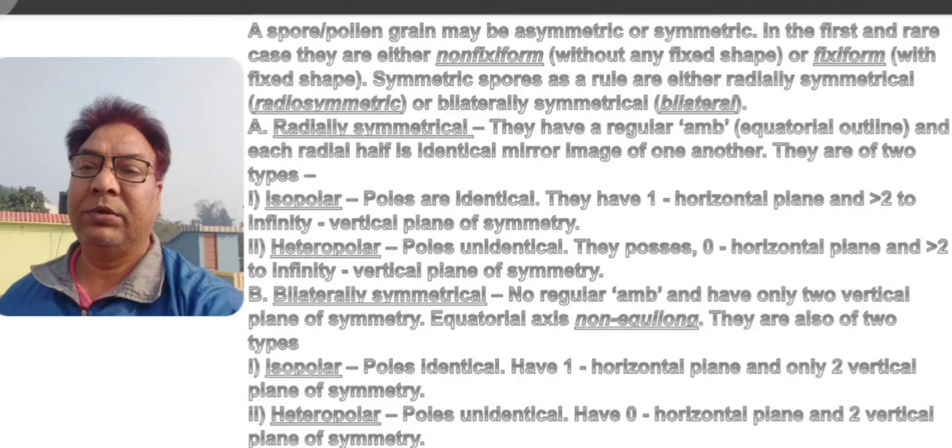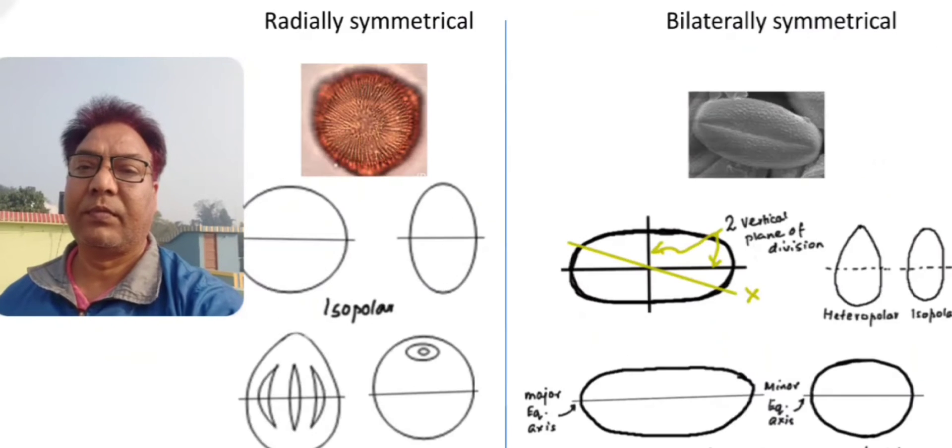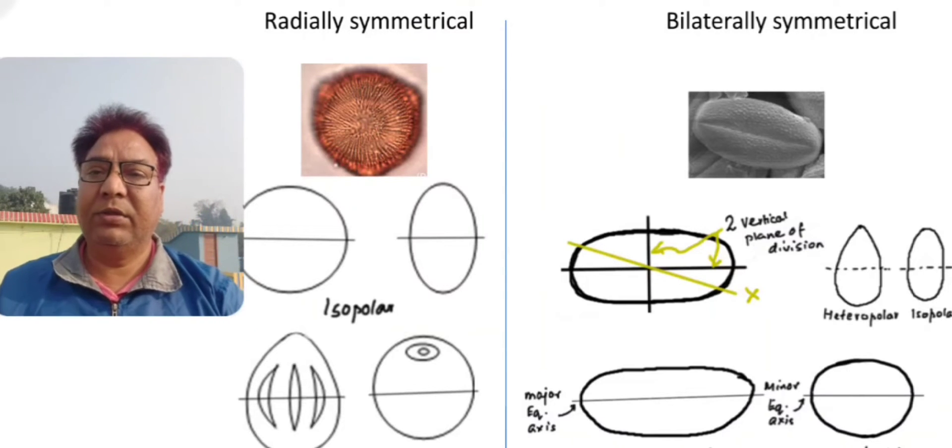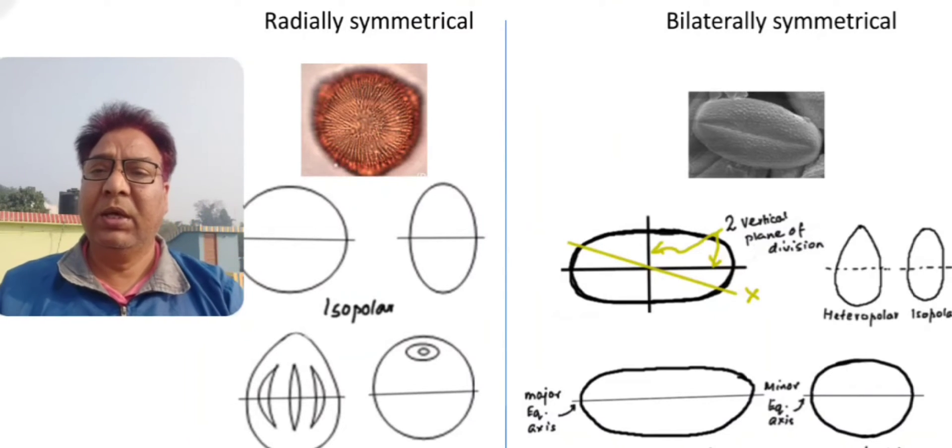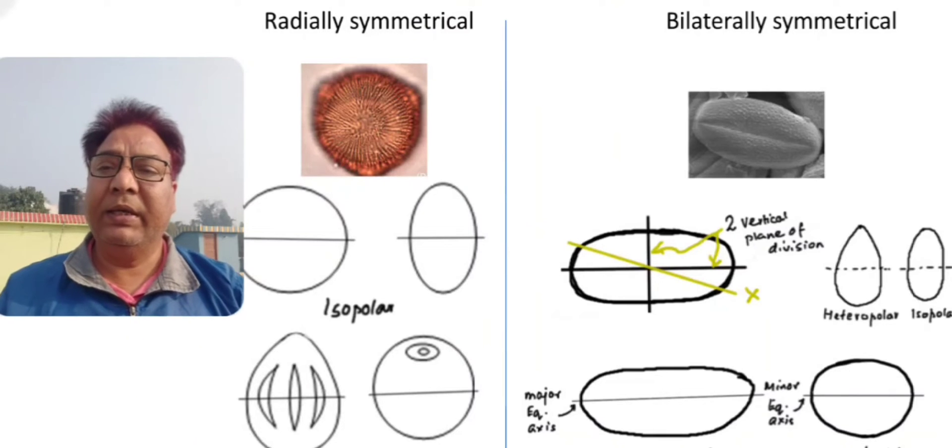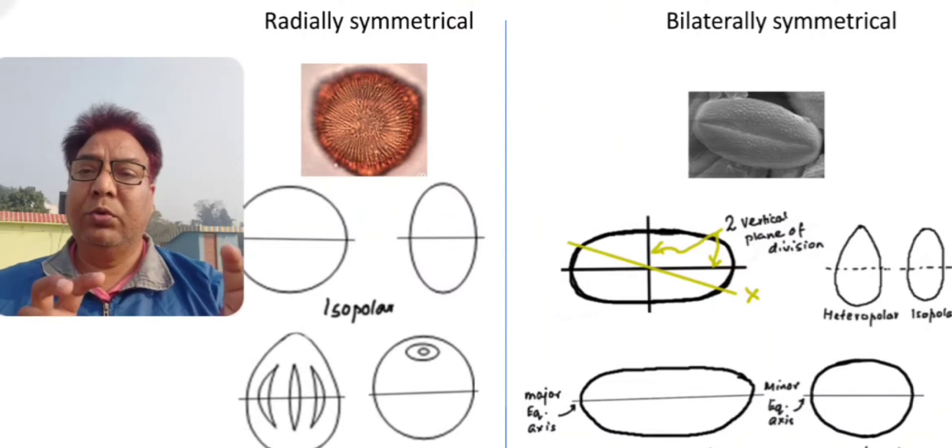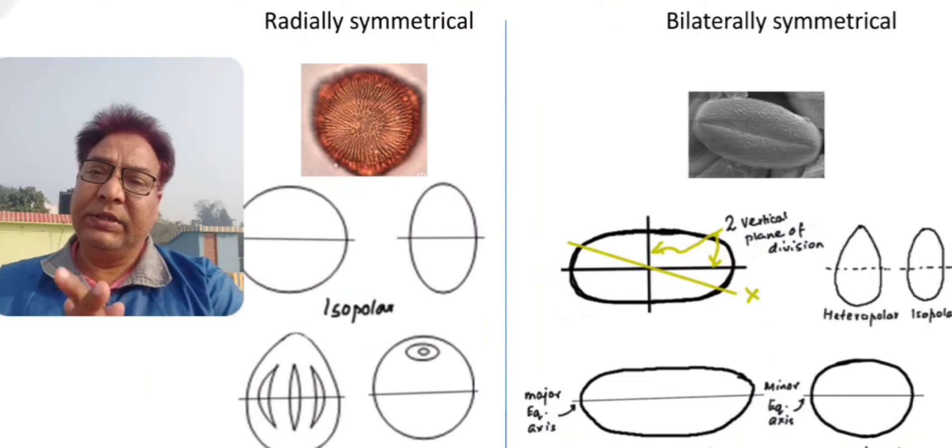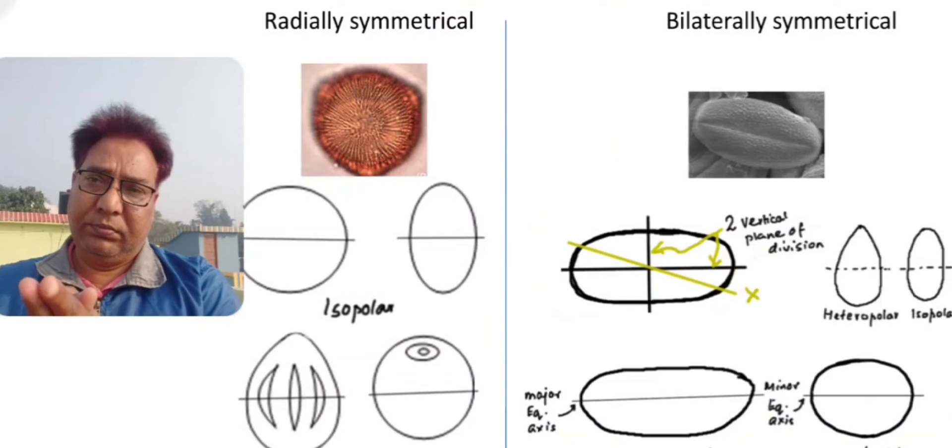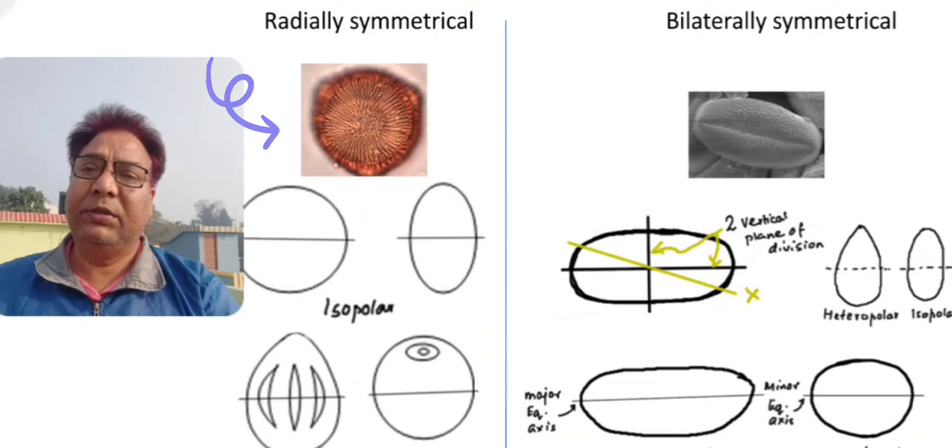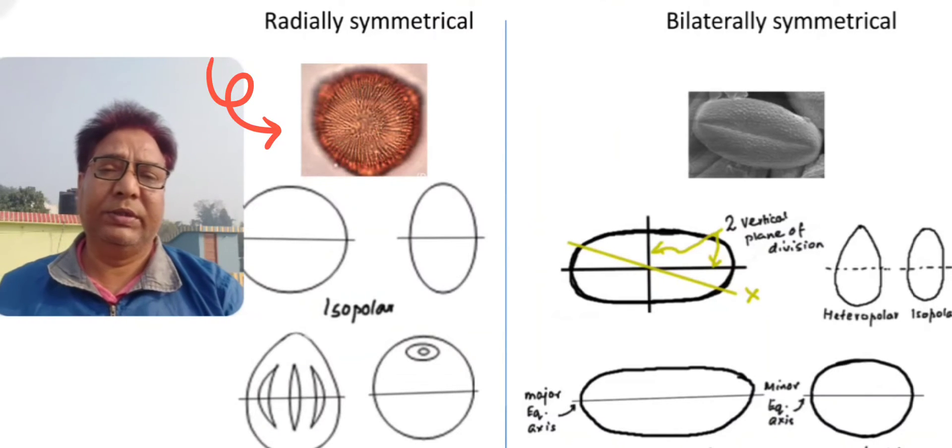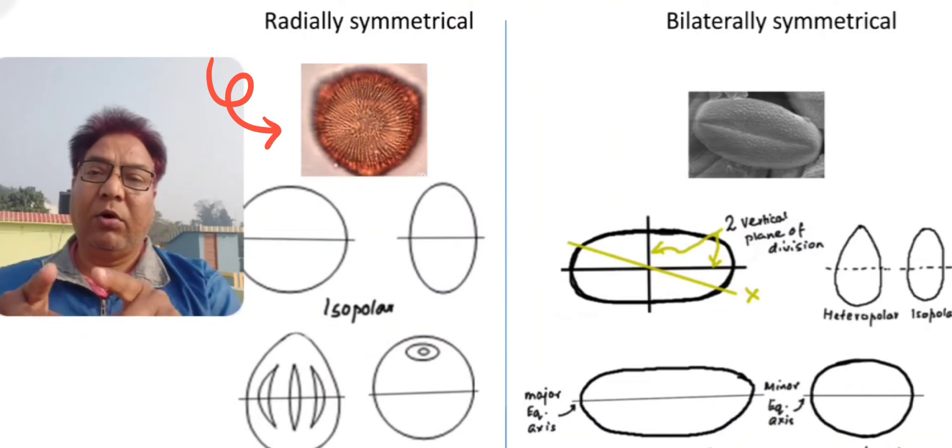This is the picture of the radially symmetrical and bilaterally symmetrical spores. By this diagram, you can see there are two original pictures taken from the microscope. This is the polar view of the left panel for radially symmetrical spores. There are three colpi.